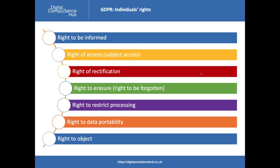There is also the right to object to processing. And the eighth right — which was accidentally missing from the slide — is rights relating to automated decision-making and profiling. If artificial intelligence or a computer system is making decisions based on data processing that impacts an individual, that person has a right to object and request that a human review the decision instead.